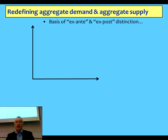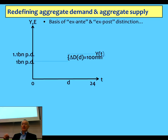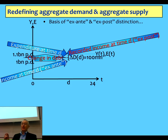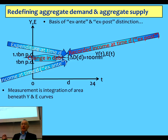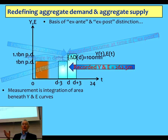One way to look at it is to imagine spending over a day. Say expected income and expenditure are both running at a billion dollars per day, up to a point at which somebody takes out additional debt — say a hundred million dollars. Once that money is borrowed and spent, it becomes somebody's income and continues circulating as income, so you get a jump at that point. Ex-ante, income is the prior level, the change in debt is separate, and that's expenditure. But if you measure backwards, recorded income at time d will include the impact of the change in debt. Measuring the area beneath the curve over a six-hour period centred on the event gives 262 million, versus 250 million for a previous six-hour block.